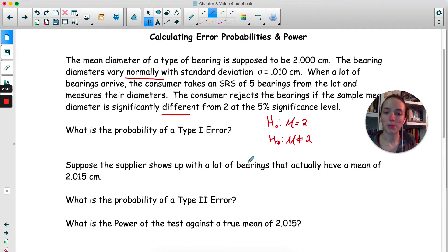The probability of a type 1 error is always just the significance level. So 0.05 is our probability of a type 1 error.